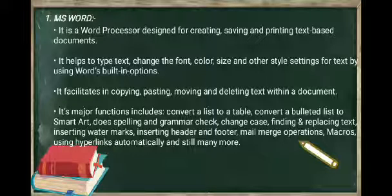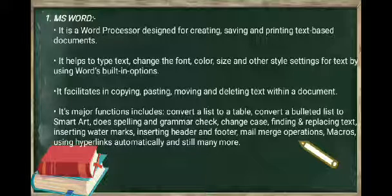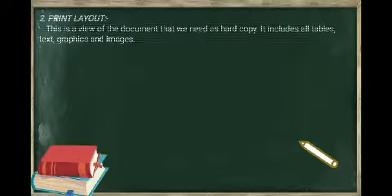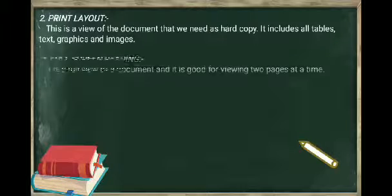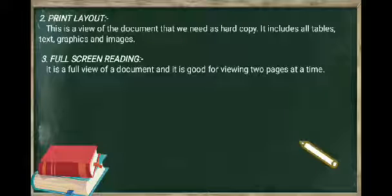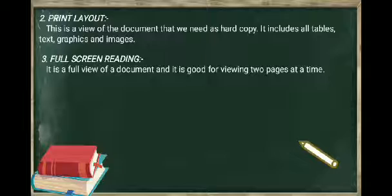Let us now have an idea about five document views used in MS Word. Print layout - this is a view of the document that we need as hard copy. It includes all tables, text, graphics and images. Full screen reading - it is a full view of a document and it is good for viewing two pages at a time.